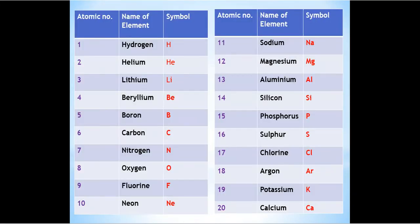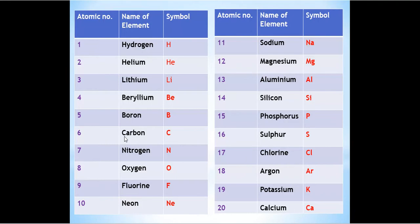Now we'll start. In this slide I'll tell you the names of the elements along with their atomic numbers. Hydrogen (1), helium (2), lithium (3), beryllium (4), boron (5), carbon (6), nitrogen (7), oxygen (8), fluorine (9), neon (10), sodium (11), magnesium (12), aluminium (13), silicon (14), phosphorus (15), sulfur (16), chlorine (17), argon (18), potassium (19), and calcium (20).